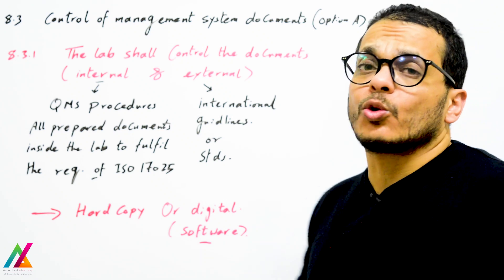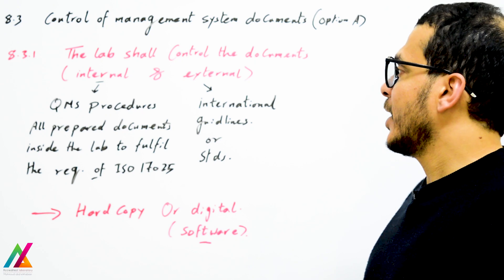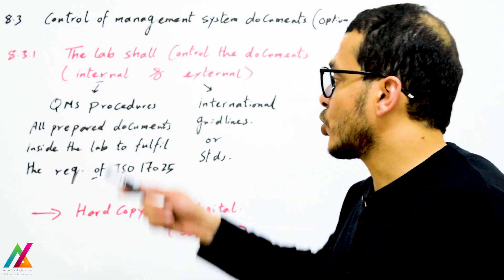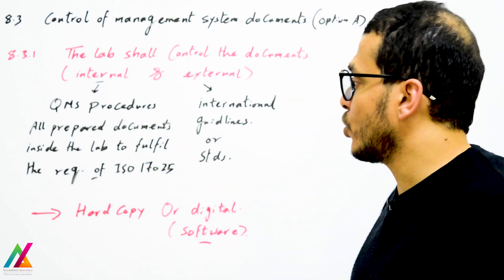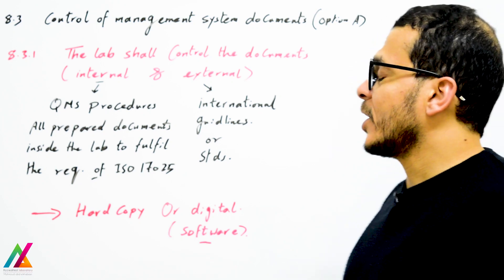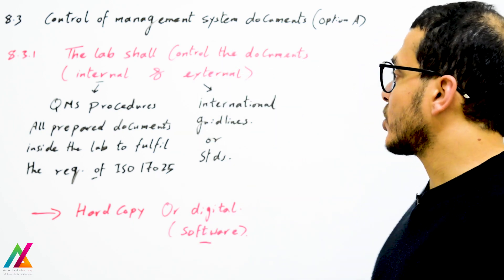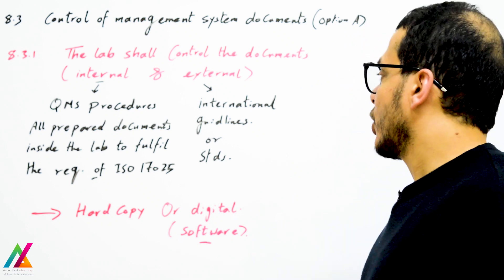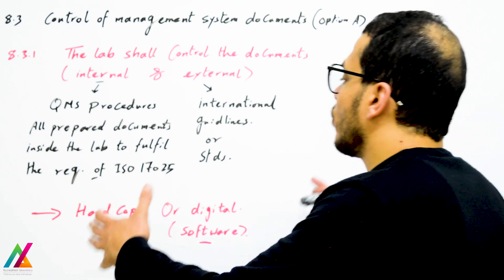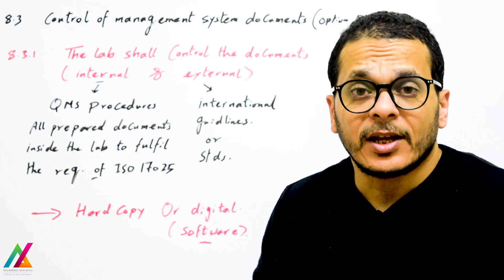You should control all documents inside the lab — all documents under your quality management system. The lab shall control documents whether internal or external. Internal documents include quality management system procedures and all prepared documents inside the lab to fulfill the requirement of ISO 17025. External sources include international guidelines or standards used inside the lab.